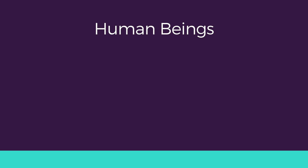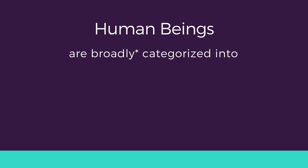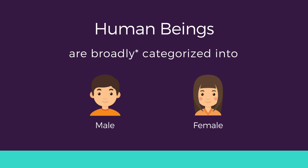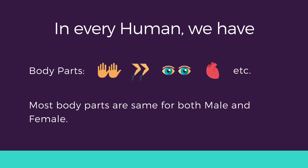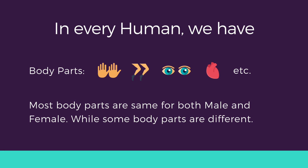Human beings are living forms broadly categorized into two types — male and female. Every human being, male or female, has two legs, two hands, two eyes, one nose, one heart, etc. There are body parts common to both male and female, but then there are some specific body parts present in a male which are not present in a female, and vice versa.